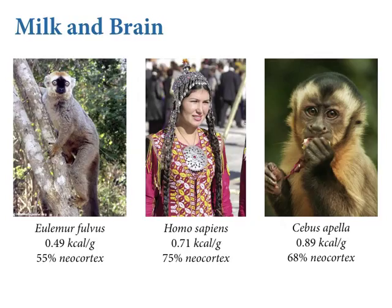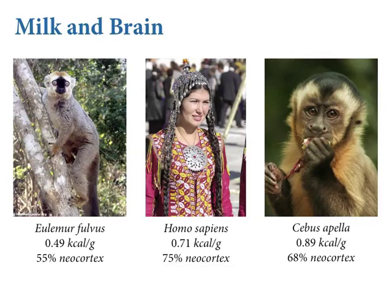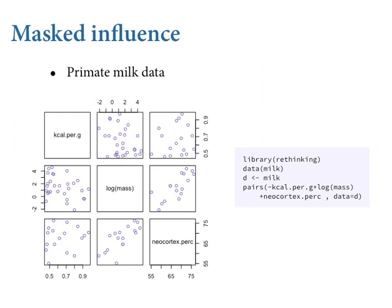Cebus capucinus is the brainiest monkey — that's Marcel from Friends — with really energetic milk and very encephalized. They're the most encephalized monkey based on this data. So is there a systematic relationship between milk energy and neocortex size? If you're interested in life history evolution among mammals, primates are a good place to look at the relationship between slow life histories and parental investment. Milk is expensive — the question remains unanswered, by the way.